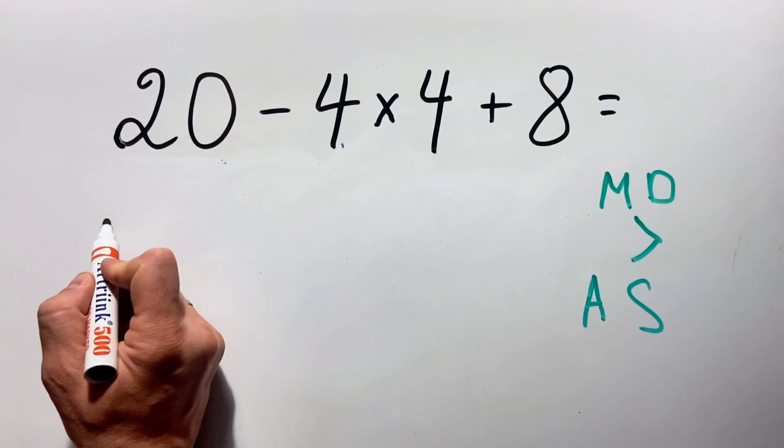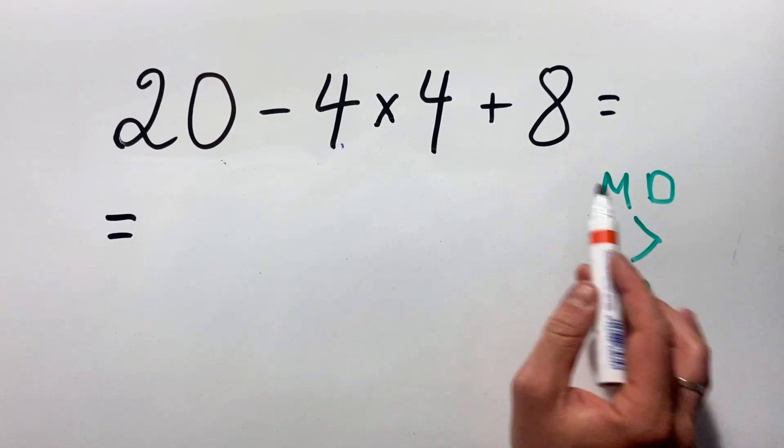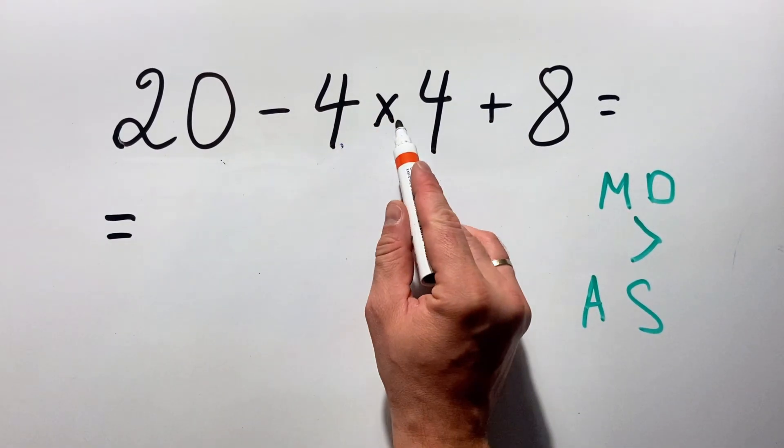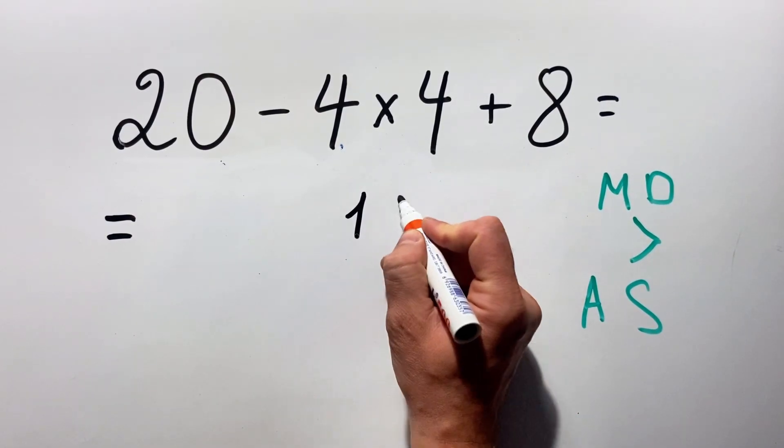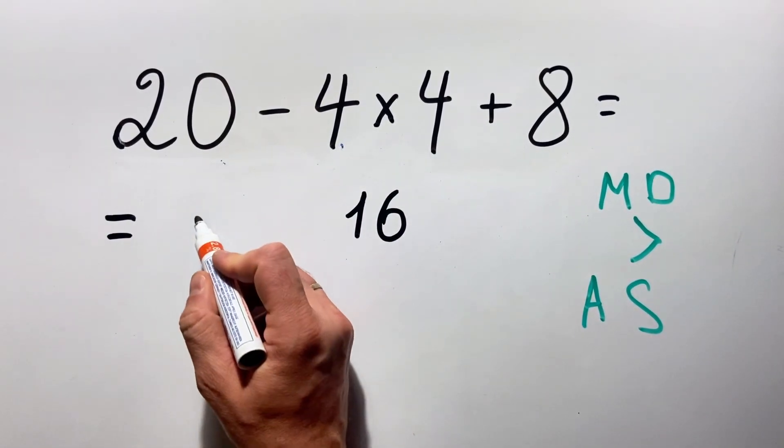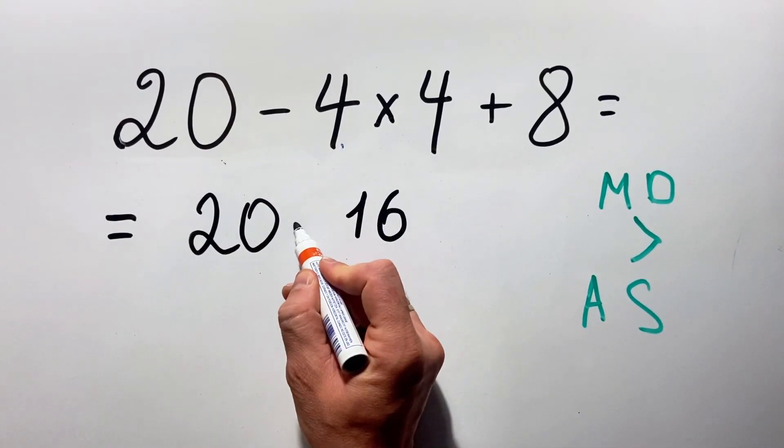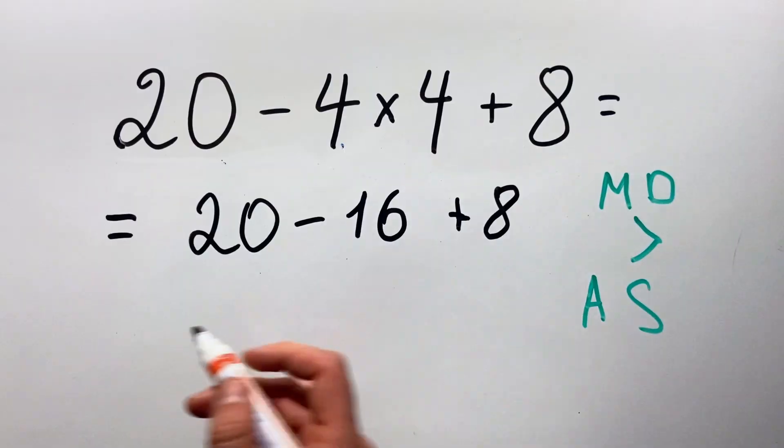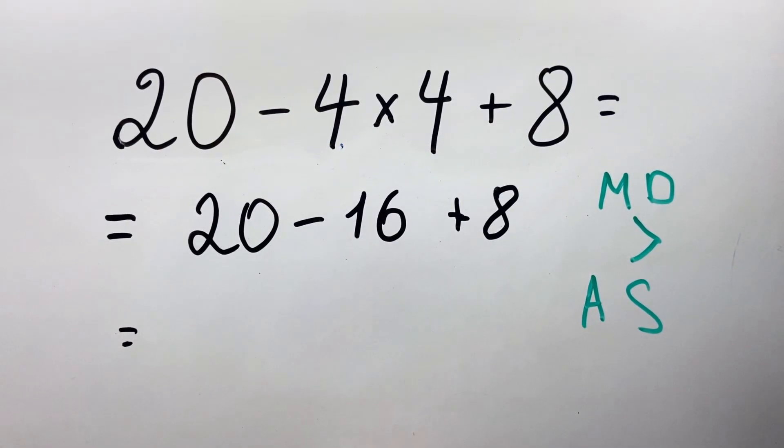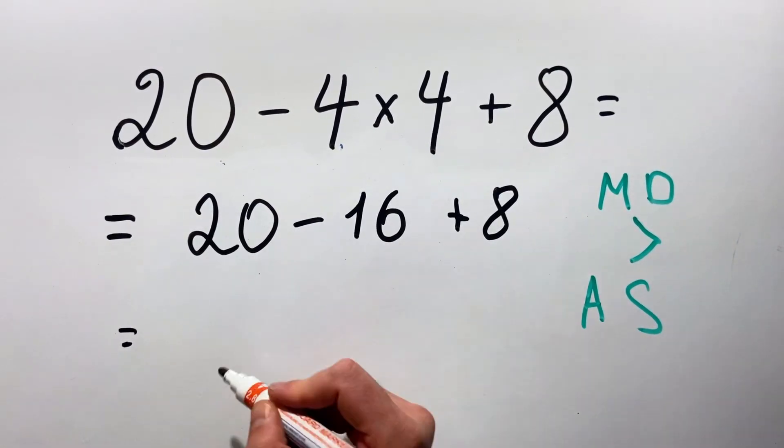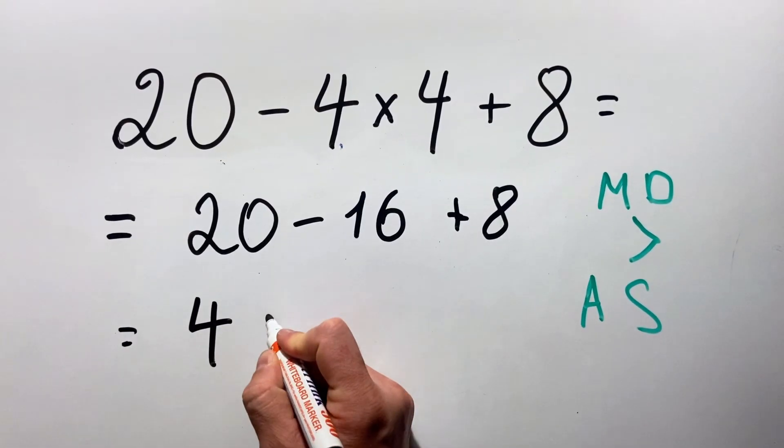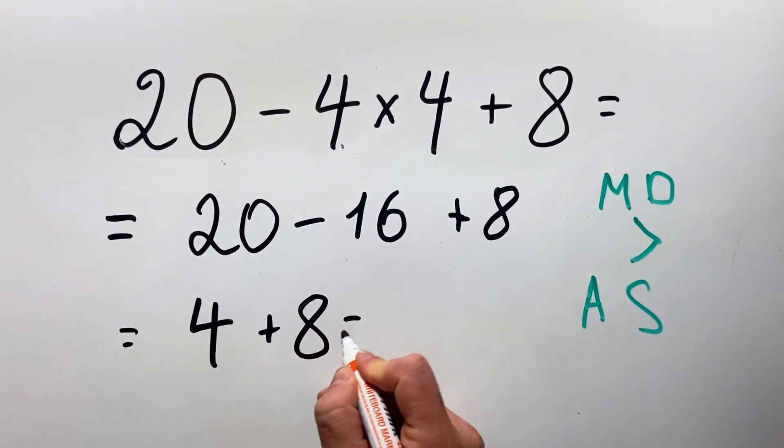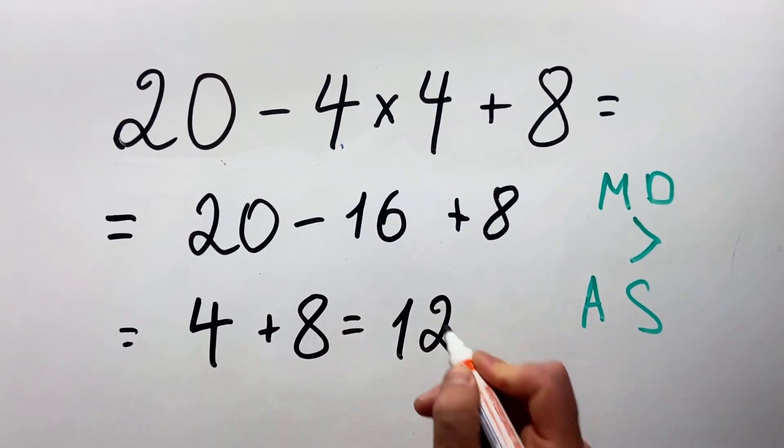Therefore, what do we get? As we said, first we'll do multiplication. So we have 4 multiplied by 4 equals 16. Then we have 20 minus 16 plus 8. From here, it's pretty straightforward. 20 minus 16 is 4, plus 8, and we get 12.